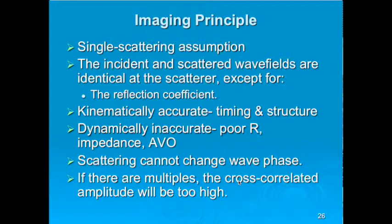Once we do the dot product, we lose the information about where in time the multiples contributed. We don't know where artifacts are coming from — they could show up at great depth in the image but come from very shallow time parts of the reconstructed wave fields.